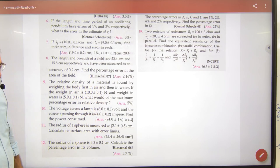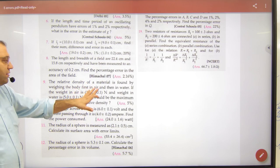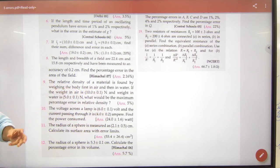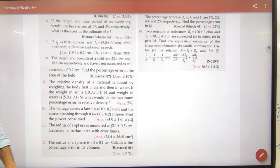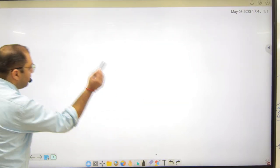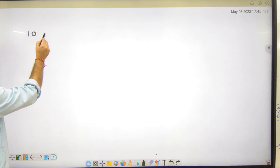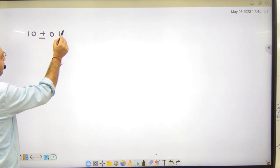Dekho. Relative density of material is found to be, ya by weighing the body first in air then in water. To air mein usko humne weight kiya, phir humne usko water mein weigh kiya.